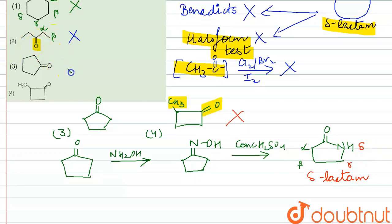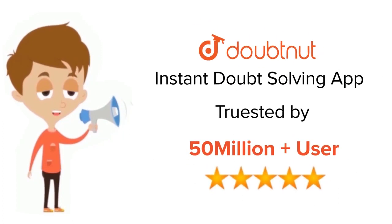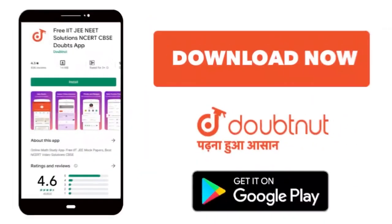This shows that option number three is your correct answer. Thank you. For class 6-12, IIT, JEE, and NEET level, trusted by more than 5 crore students, download Doubtnet app today.